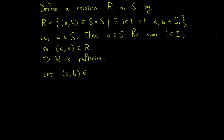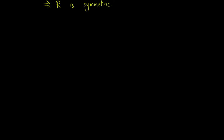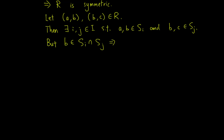Next, let (A, B) be an element of R. Then there exists i such that A and B lie in S_i, which is the same as saying B and A lie in S_i, so (B, A) lies in R and R is symmetric. Now let (A, B) and (B, C) be elements of R. Then there exist i and j such that A and B are in S_i, and B and C are in S_j. In particular, B is in both S_i and S_j, which implies S_i equals S_j since they are part of a partition. So A and C are both in S_i, which implies (A, C) is in R, and R is transitive.